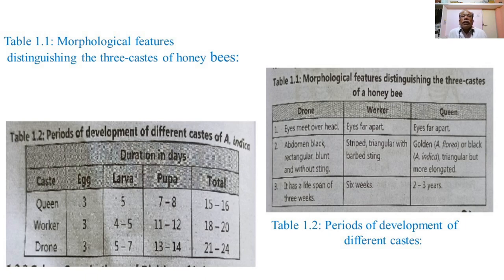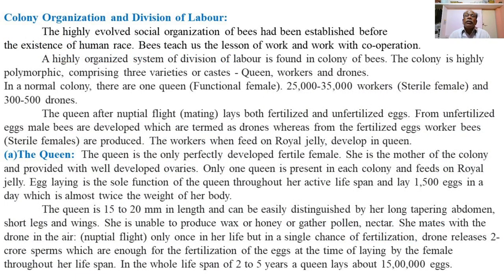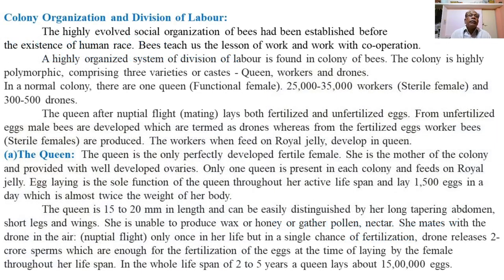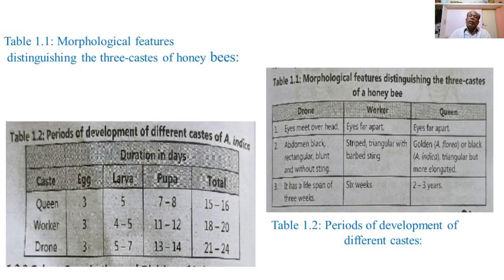This table shows the period of development for each stage of the life cycle for each caste, and the total period required from egg to adult stage to complete the life cycle. With this explanation of the life cycle of the honeybees and its different stages — egg, larva, pupa, and adult — we will stop here. Next time we will continue with colony organization and division of labor among the honeybee species. Thank you.